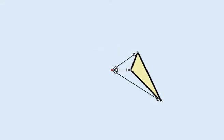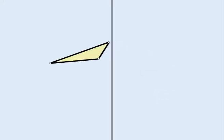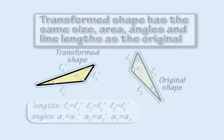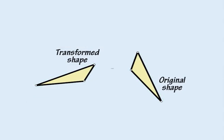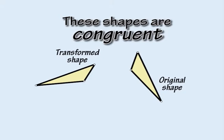Transforming a shape by rotating, reflecting or translating it, or through a combination of these transformations, produces a transformed shape which has the same size, area, angles and line lengths as the original shape. In this case, the original and transformed shapes are said to be congruent.